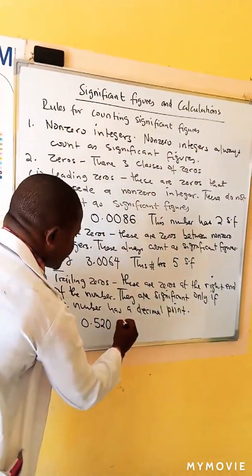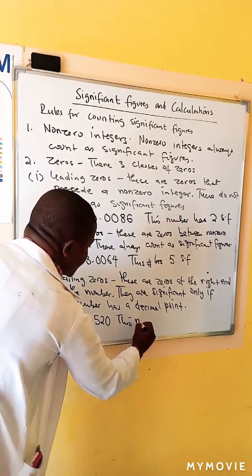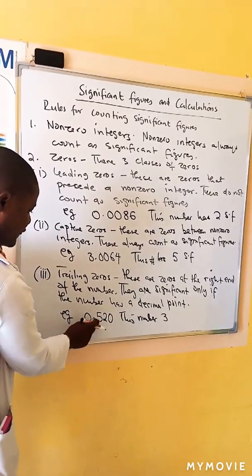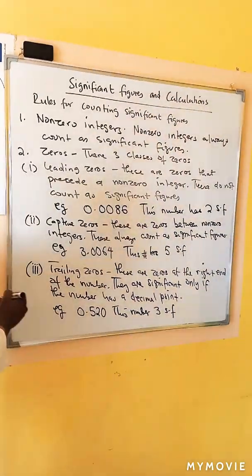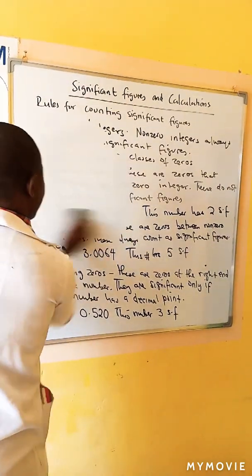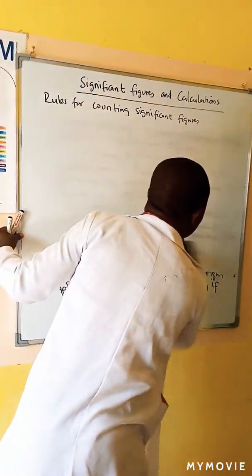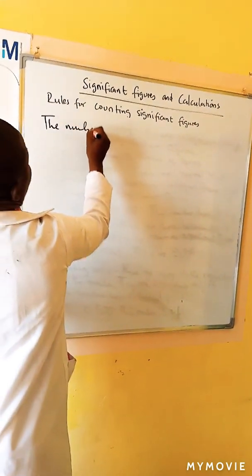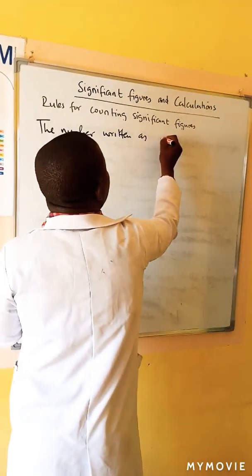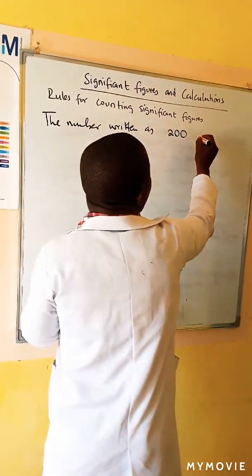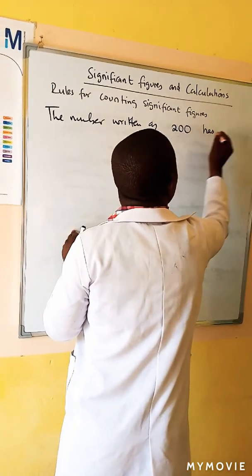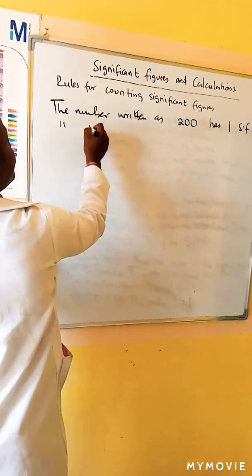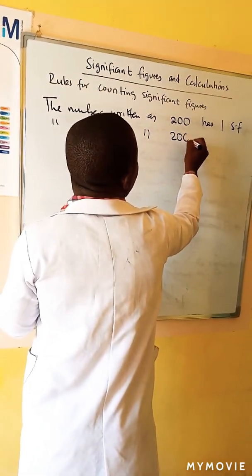For example, consider the number 200. This trailing zero — because of the decimal point it is significant; this is a leading zero, it's not significant. The number written as 200 has one significant figure because there's no decimal point.